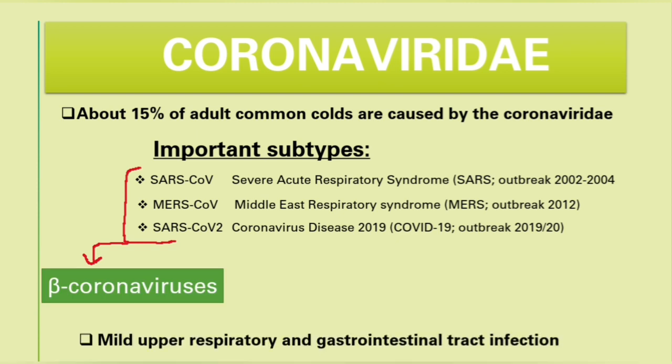They cause mild upper respiratory and gastrointestinal tract infections. For the GIT, it's particularly SARS-CoV and MERS-CoV.